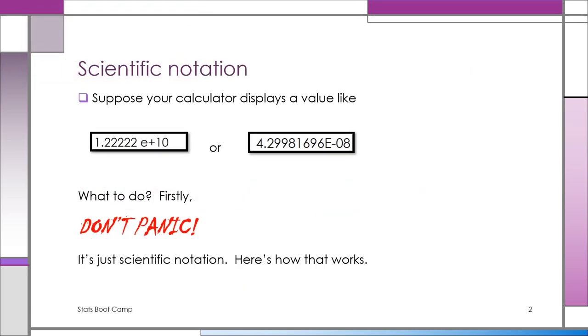Sometimes your calculator displays something unexpectedly alien with maybe the letter E, a plus sign, a minus sign, and you're not really sure what to make of it. If you haven't seen this before, that's just scientific notation. It's a way to make a number with many digits more concise, and we'll see how that works. So don't worry about it. Don't panic. It's quite normal.